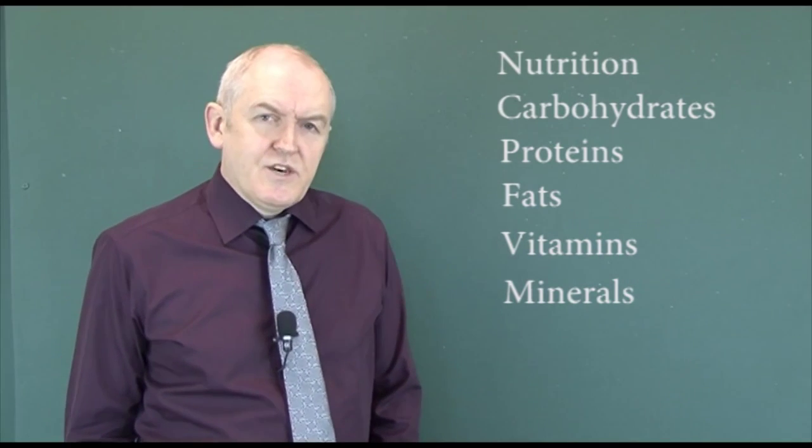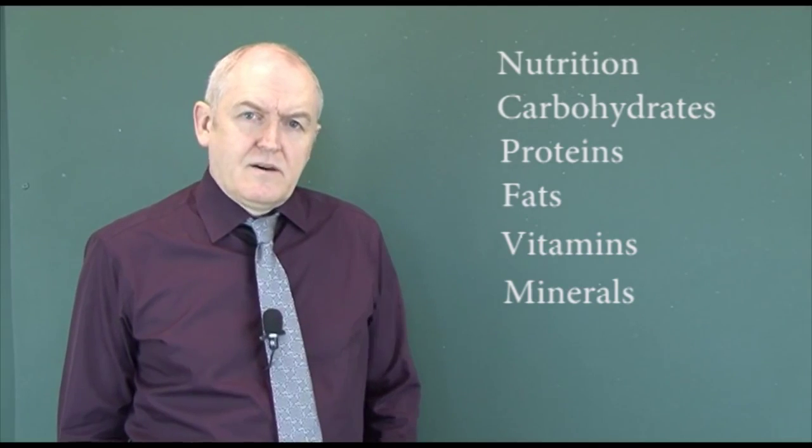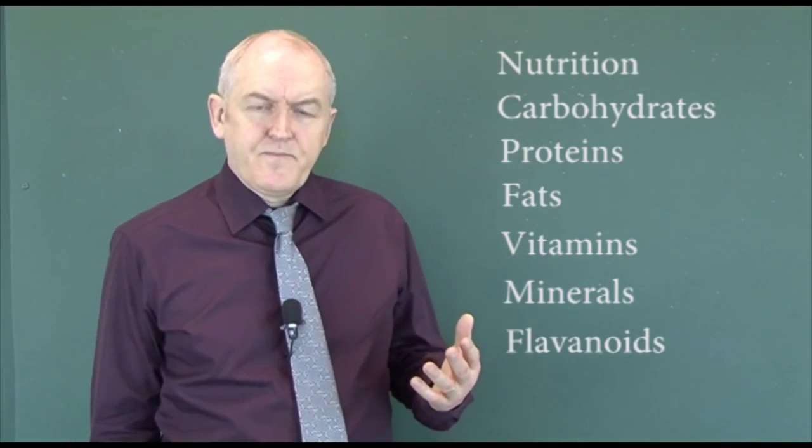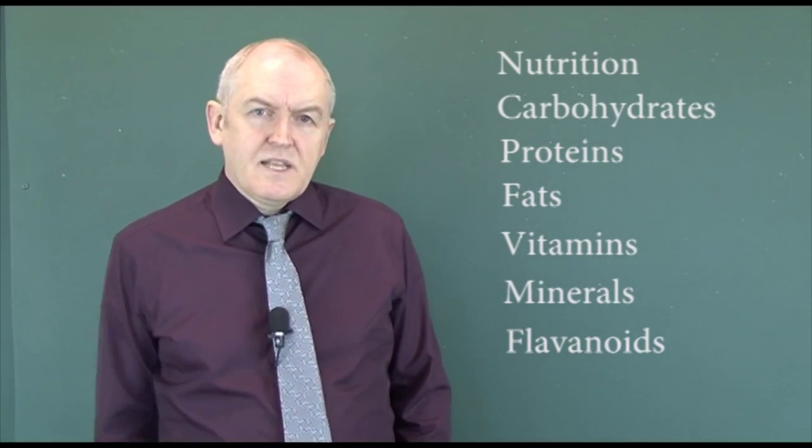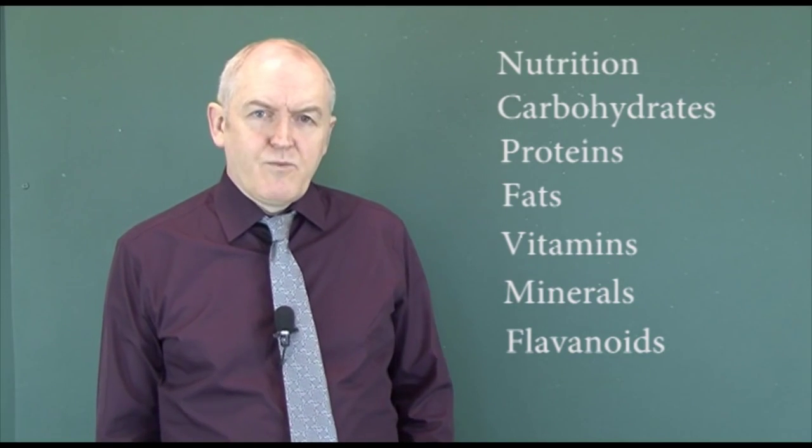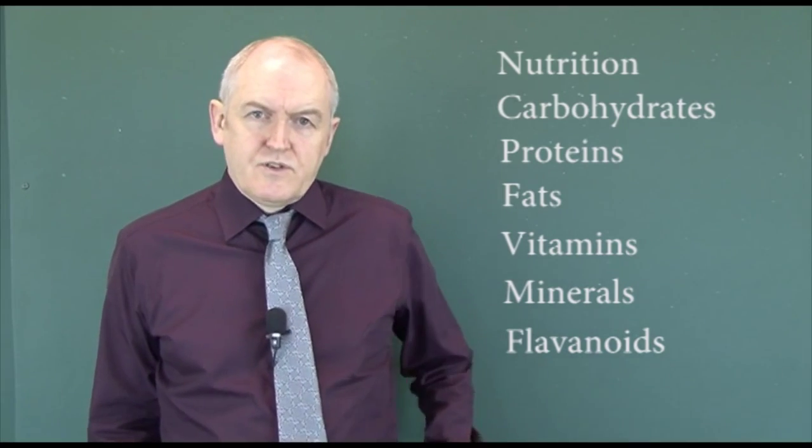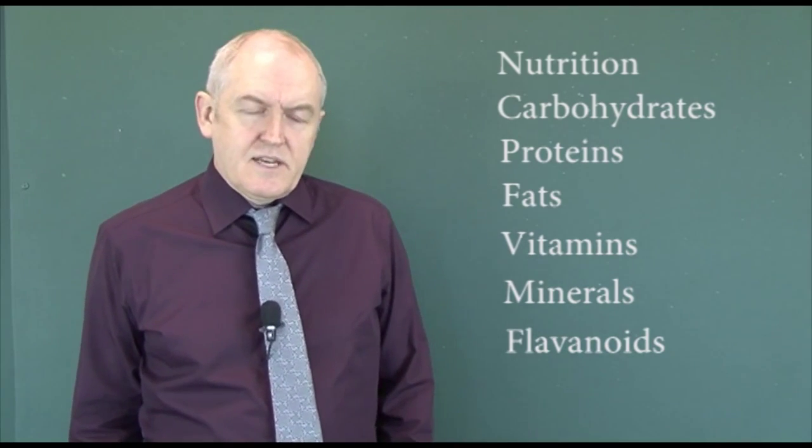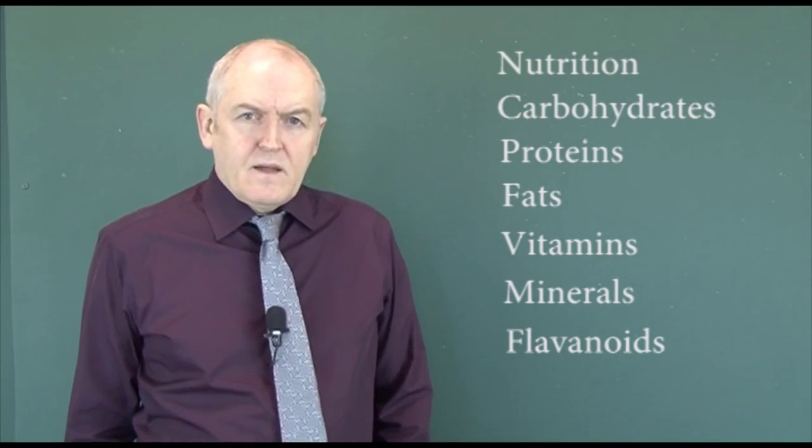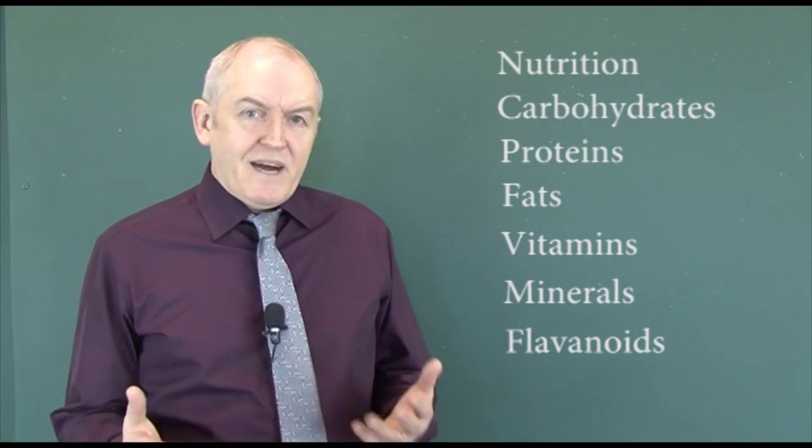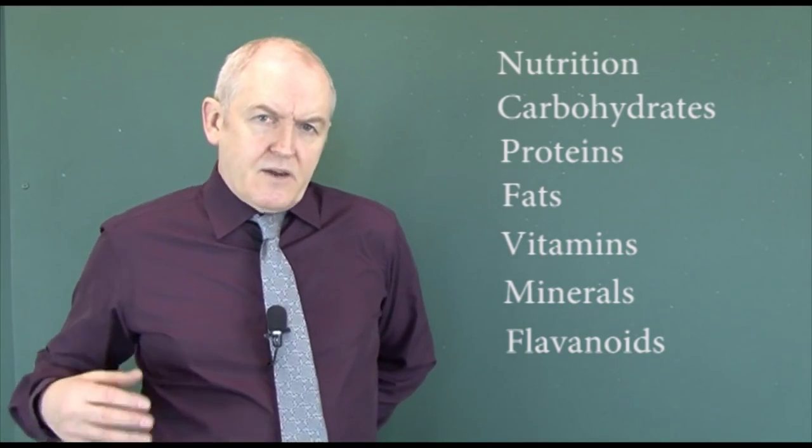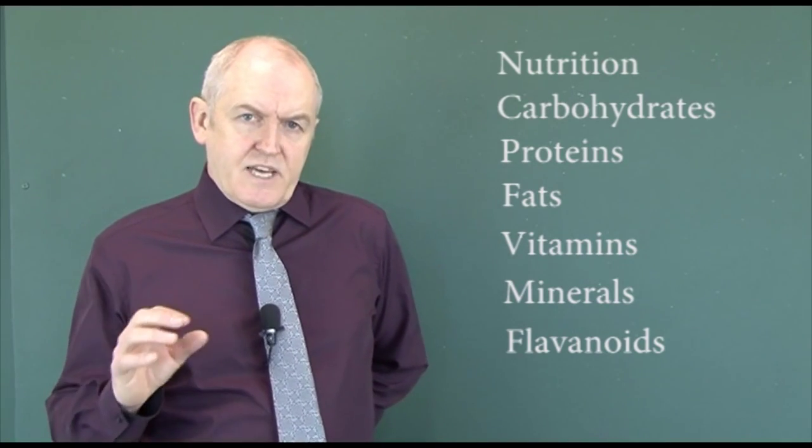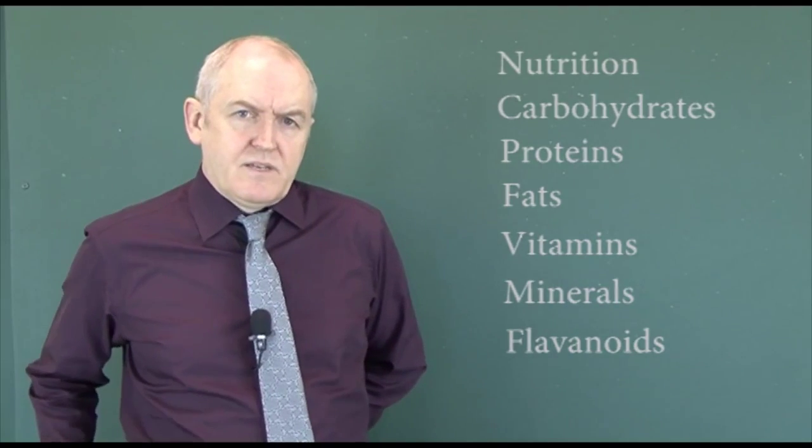And another one that some research is starting to come out on now is flavonoids. Flavonoids are present in the colored parts of fruits and vegetables. And there is evidence that flavonoids can help with healing of chronic wounds, such as leg ulcers, for example. So make sure the patient's got a balanced diet and an adequate diet, and bear in mind they're probably going to need more than normal to facilitate the healing process if a lot of tissues have been damaged.